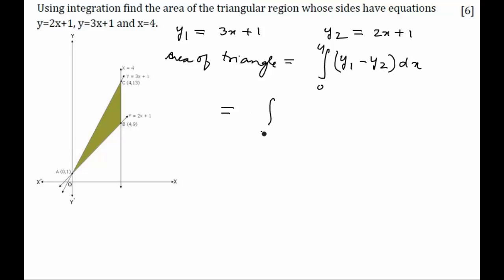Substituting from 0 to 4: integral of (3x + 1) - (2x + 1) dx. This simplifies to the integral of x dx from 0 to 4.